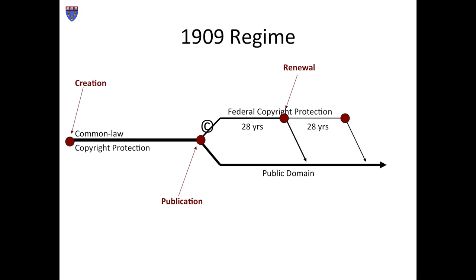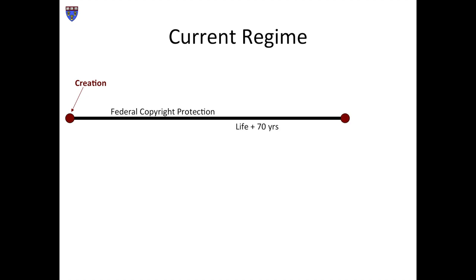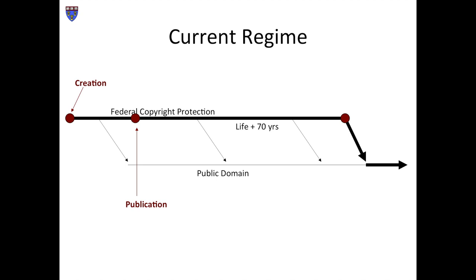Graphically, this difference can be characterized as follows. This is the original 1909 system. By contrast, this is how things work today. As soon as you create a work — more specifically, as soon as you fix it in a tangible medium of expression — federal copyright protection automatically arises. You don't need to wait until publication. And protection lasts not for 20 years or even 56 years, but for your lifetime plus an additional 70 years. Publication has some important legal effects, particularly if it's a work for hire, but it does not alter the existence of the copyright. When the term expires, the work will fall into the public domain, but that won't be until long after you're dead.